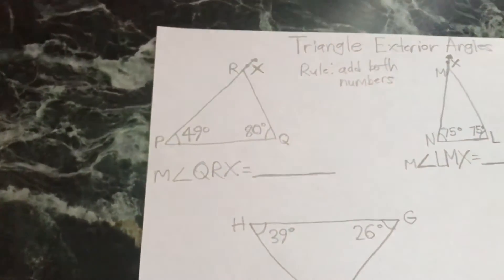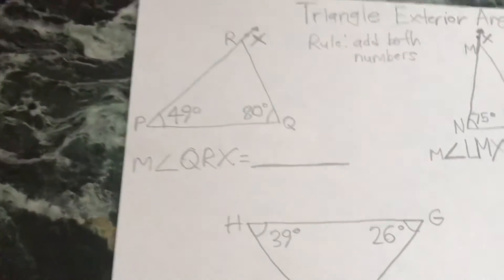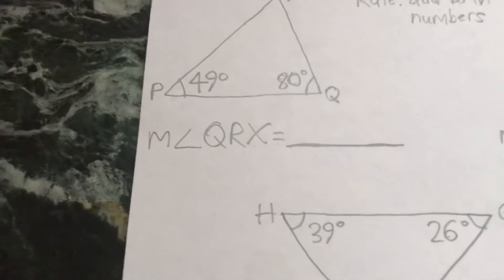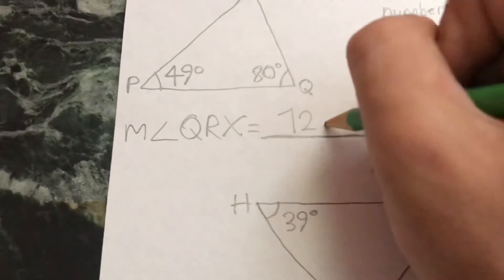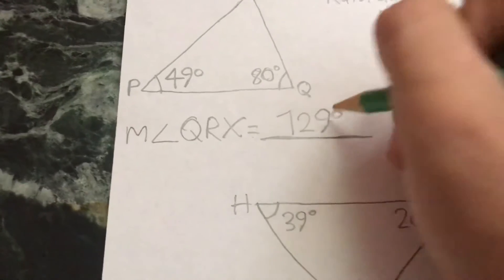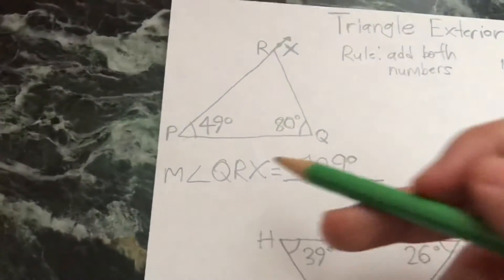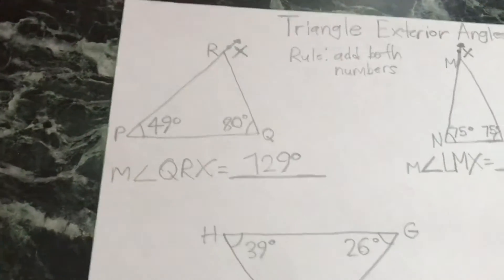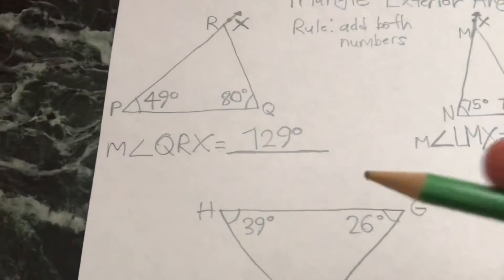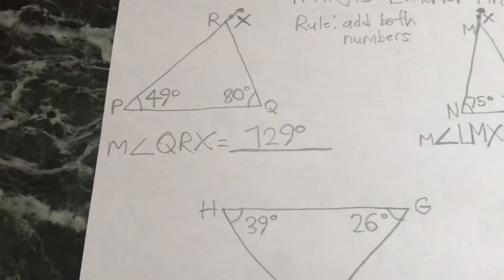So for example, 49 plus 80 equals 129. This is how you add it: 49 and 80, you add them, equals 129. So this is an easy question by the way, which is not going to take too long. I'll just keep going.